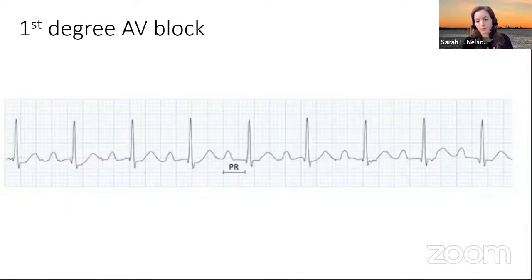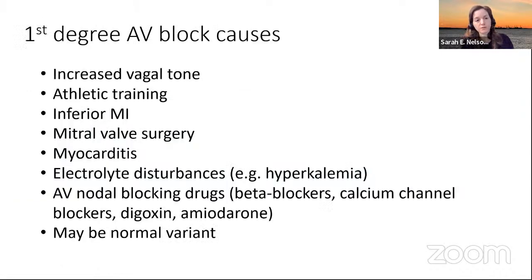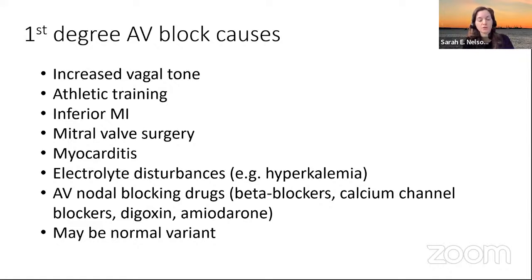Here's another example where we see the P wave that's longer than one of the big squares. When thinking about first degree AV block causes, some are similar to sinus bradycardia. We also need to keep an open mind about the possibility of an underlying cardiac etiology. There's no specific treatment per se, and it can be a normal variant.